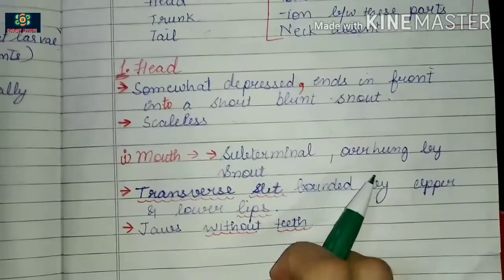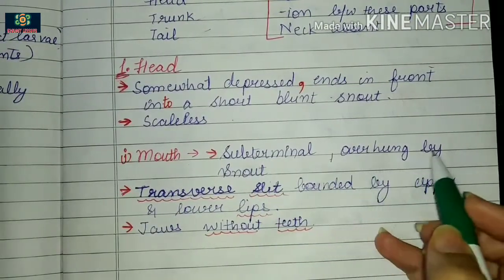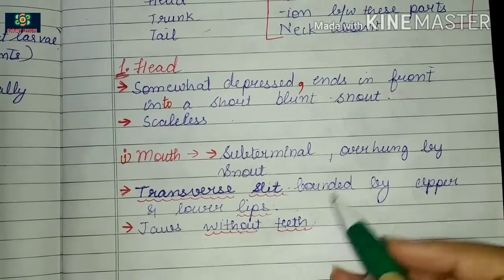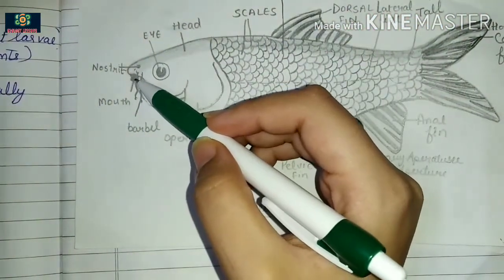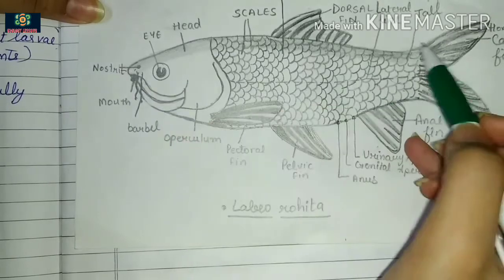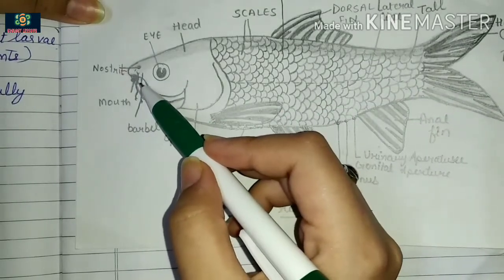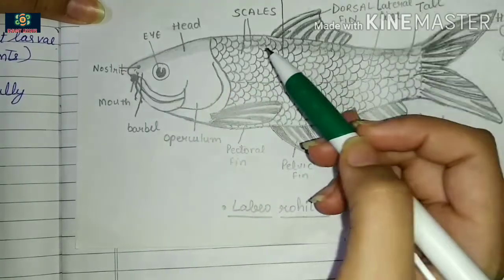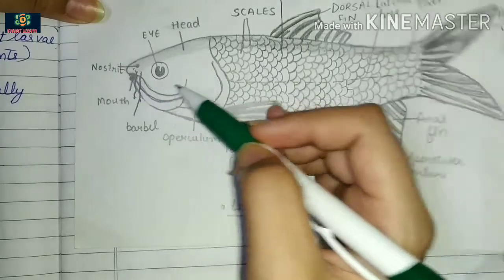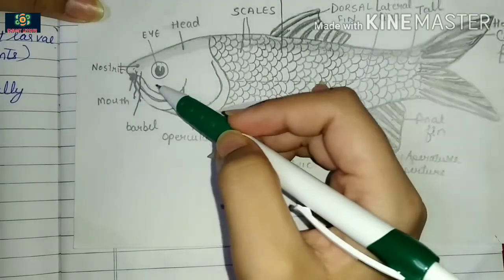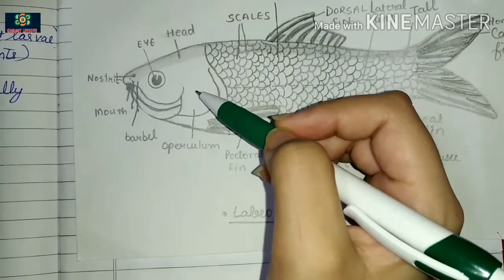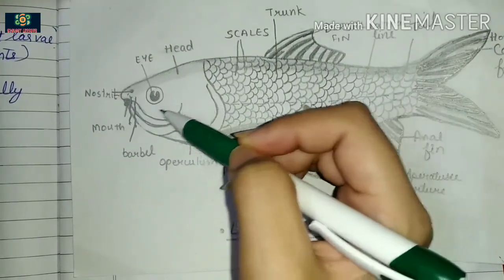The mouth is sub-terminal, overhung by the snout, forming a transverse slit bounded by upper and lower fleshy lips. The jaws are present but have no teeth. Because it is a gnathostome, jaws are present in this fish, but teeth are absent.